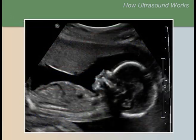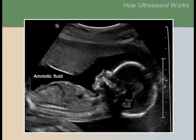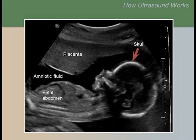This is a second-trimester fetus, placenta, and amniotic fluid. Sound waves pass through the amniotic fluid without reflecting back, so amniotic fluid appears black. The skull is white because most of the sound is reflected back. The placenta is soft tissue, so some of the sound passes through and some reflects back, which is why it looks gray. The fetal abdomen is also gray because it is soft tissue.